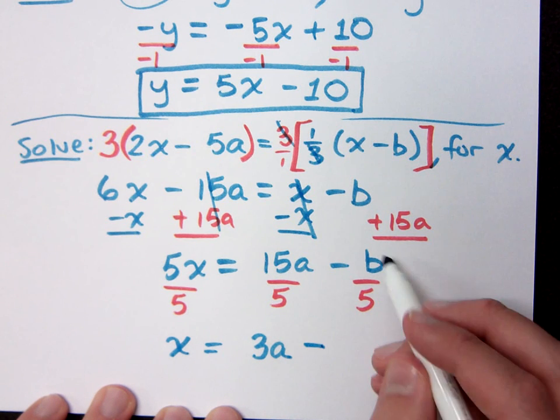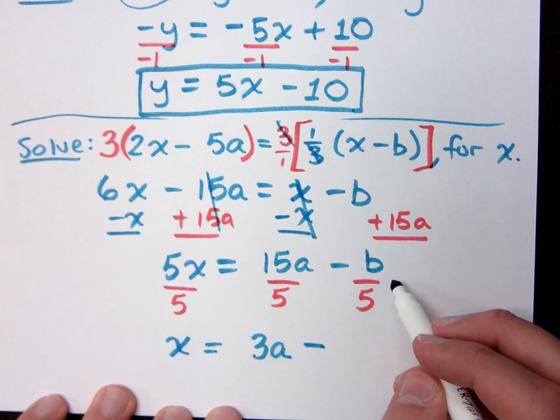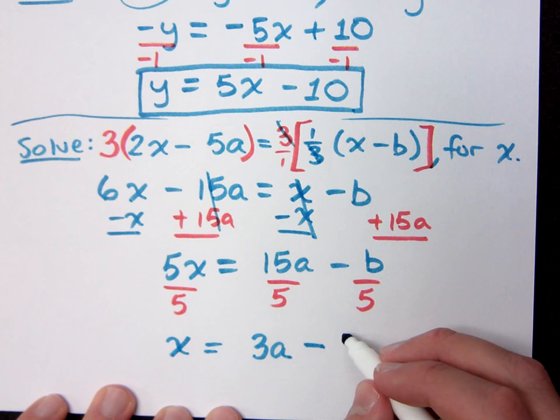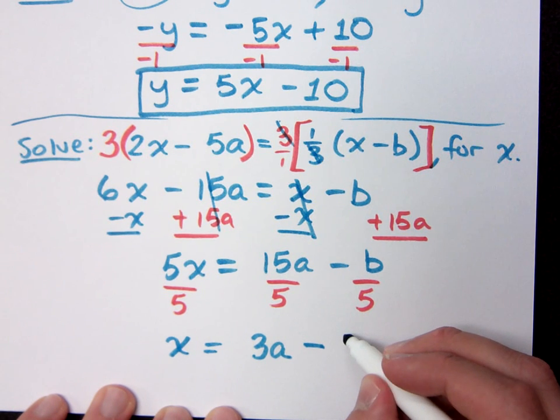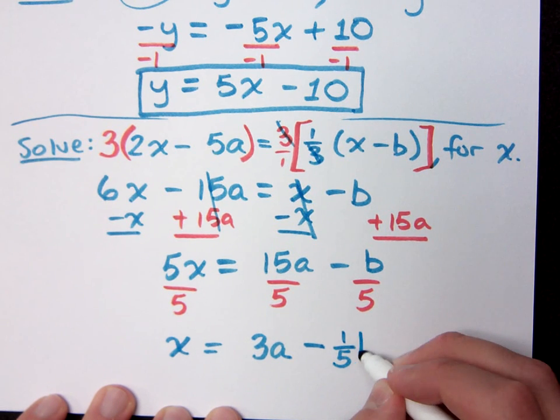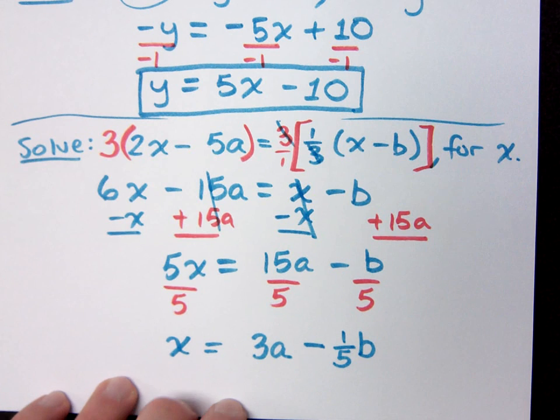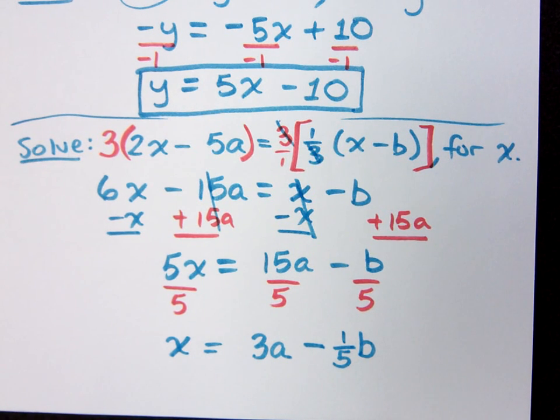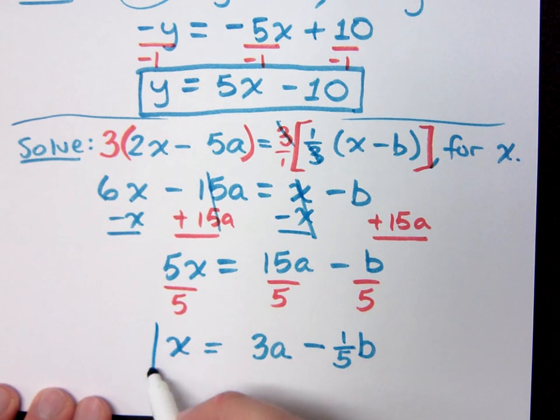Minus, how would I prefer to write this guy right here? Well, I'm going to say 1 fifth b. You could say b over 5. Again, I'm going to write it so I can clearly see the coefficient so that later on, if I need to combine this with other like terms, I'm going to need to do something else that's a lot easier when I have that coefficient clearly written there. Okay. Thank you.